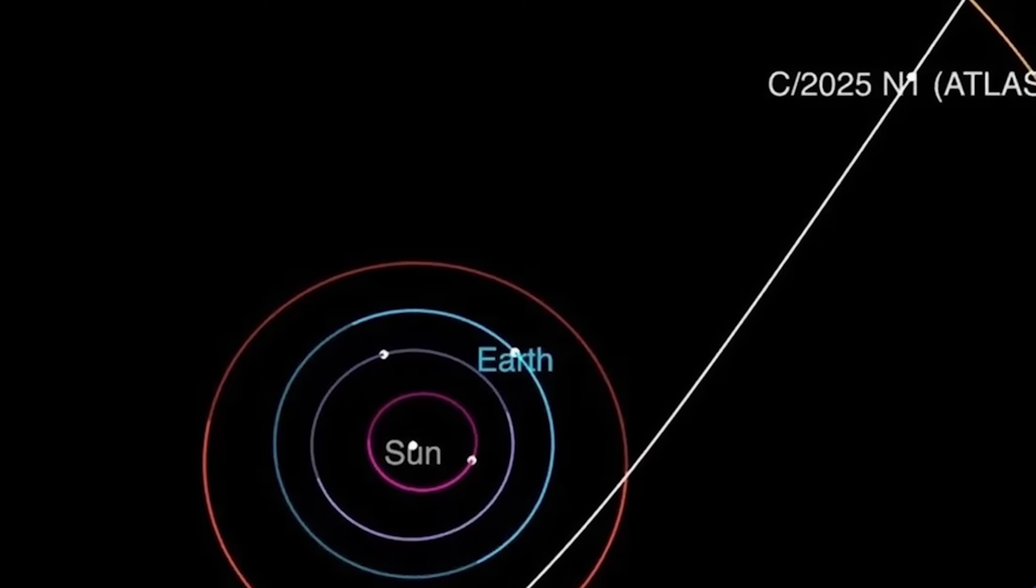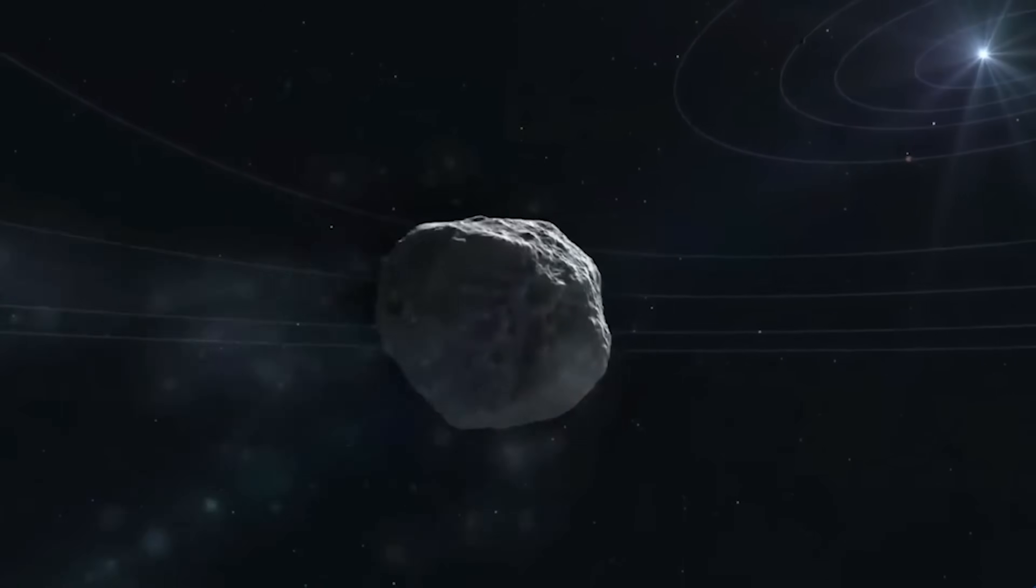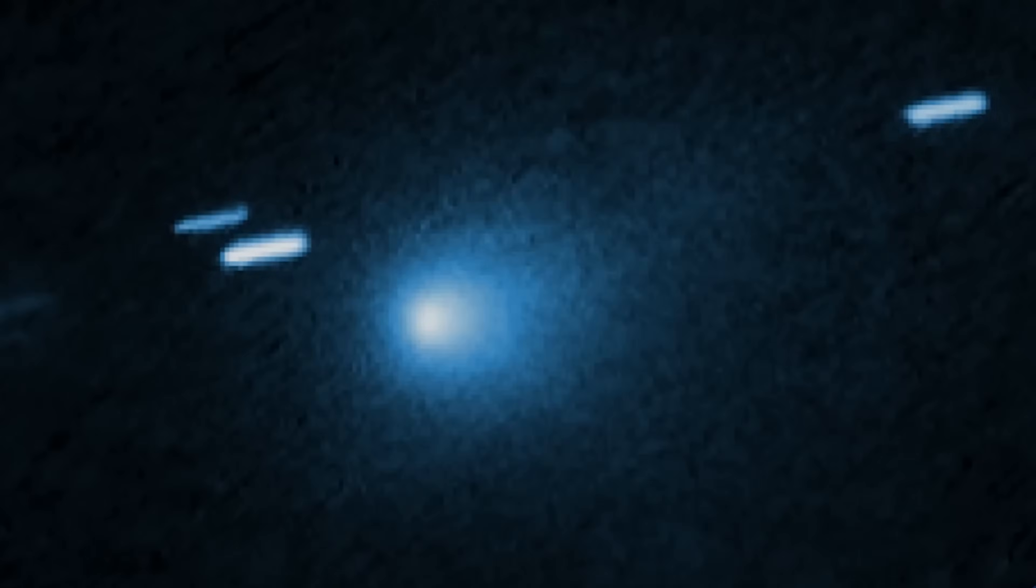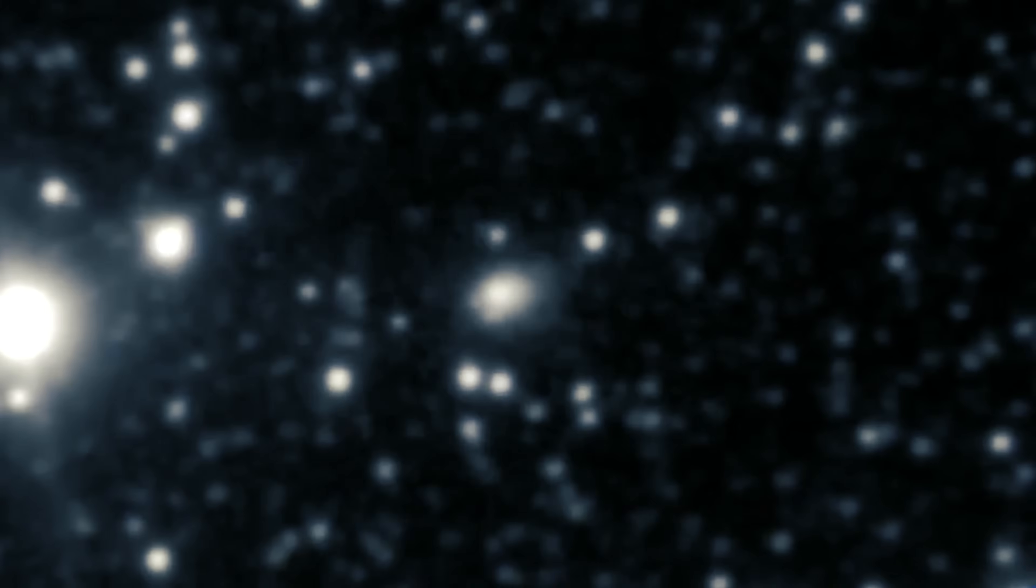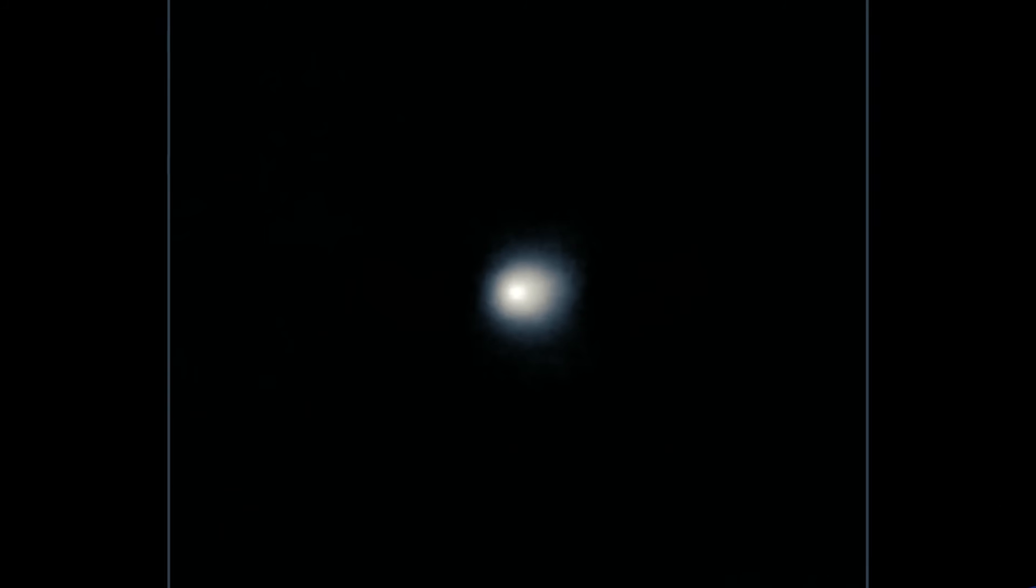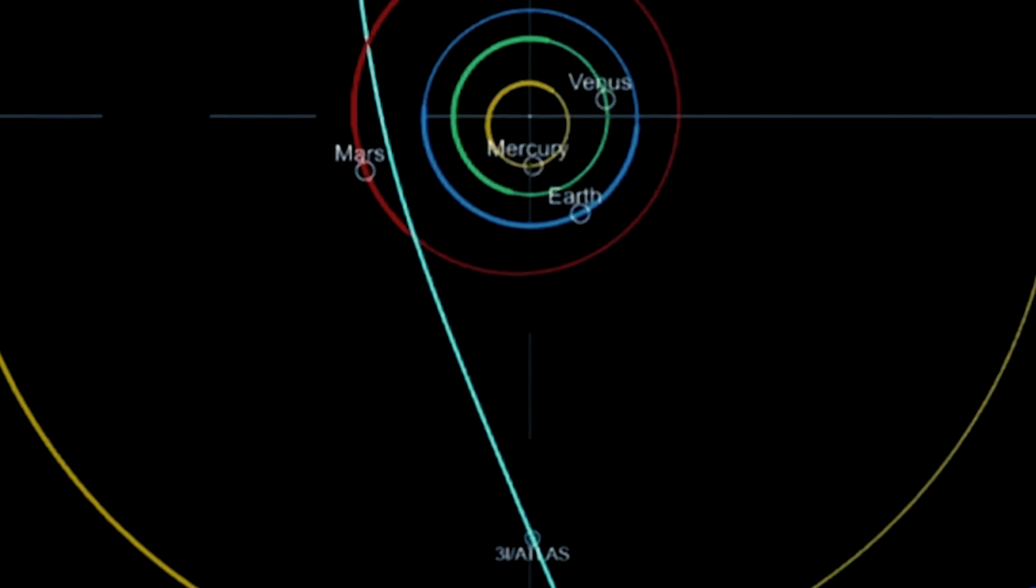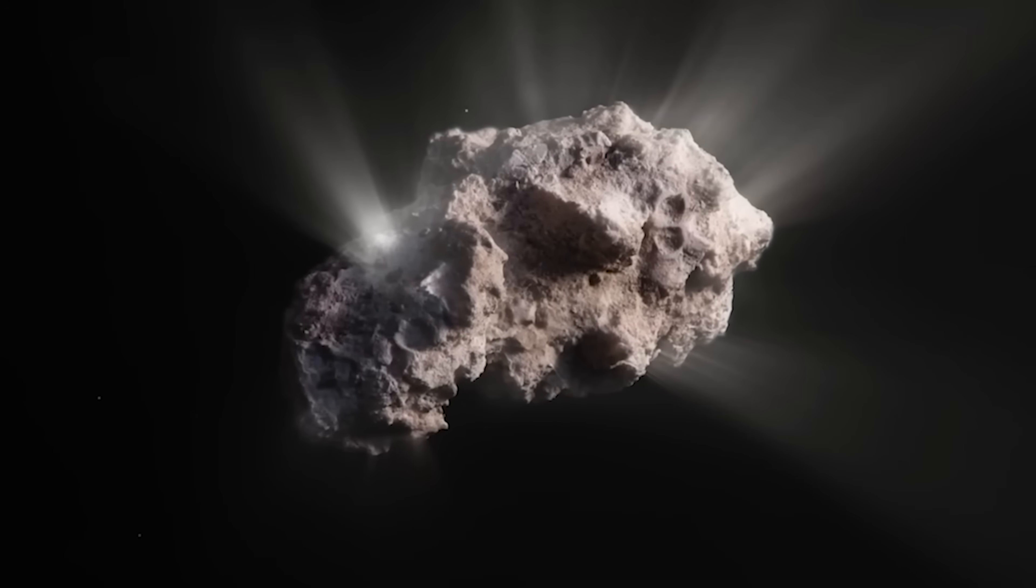What really makes Atlas such a head-scratcher is how it started behaving when it swung past the sun. At first, it put on the classic comet show. Out came the coma, that glowing halo of gas and dust, plus a long shimmering tail. Nothing unusual there. But there's a twist. This wasn't just another icy chunk from our own solar system. Its passport is clearly stamped from out of town, making it officially interstellar. That single detail changes everything. Suddenly, we're not just looking at another rock melting in the sun's spotlight. We're staring at a visitor from deep space.